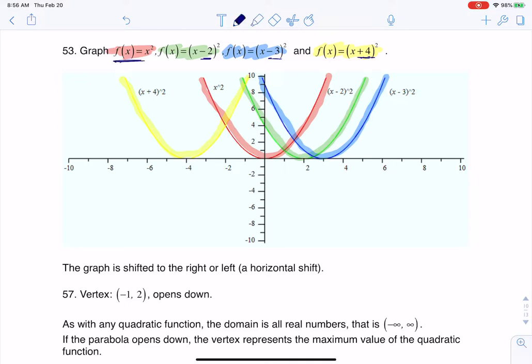But here's my parent function, right? There's the vertex at the origin. And let's start looking at where these vertices move. So I have x minus 2 squared.